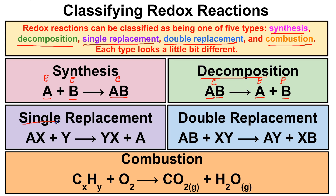In a single replacement reaction, you're typically going to have a compound reacting with an element. The compound consists of a positive ion bonded to a negative ion, and the element has no charge at all. What ends up happening is that Y donates an electron to A, so A becomes neutral and Y becomes more positive since it has lost an electron. In a single replacement reaction, a compound reacts with an element to produce a compound plus an element.